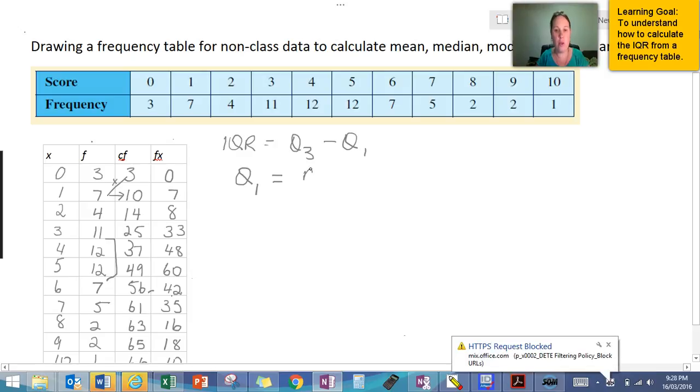So Q1 is equal to n plus 2 or 1, depending on whether you have an even set of data or an odd set of data. In this case we have an even set of data, so therefore it's going to be over 2 and divided by 4.